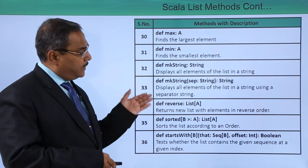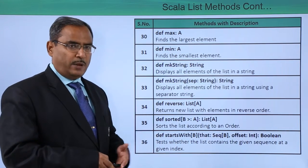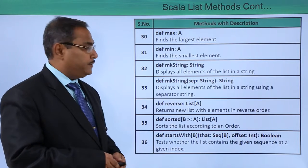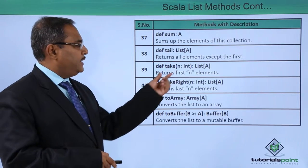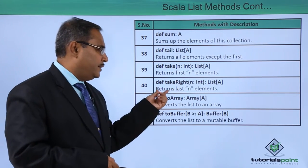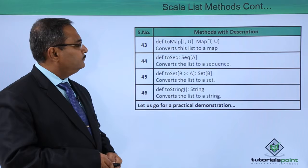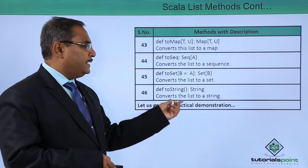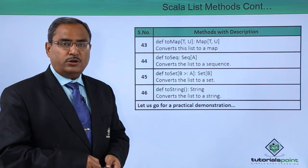These are the different methods we will be using in our list-oriented applications developed in Scala, with one-line descriptions given for clarity. We have `sum` which gives the sum of the elements of the collection, `take` which returns the first n elements, `takeRight` which returns the last n elements, and `toArray` which converts the list to an array. We also have `toMap`, `toSeq`, `toSet`, and `toString` which converts the list to a string — multiple type conversion methods are available.